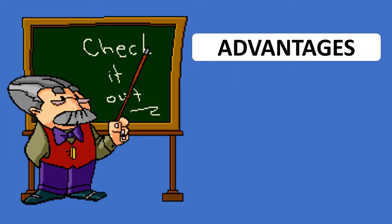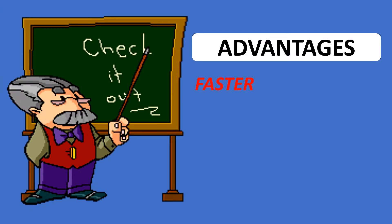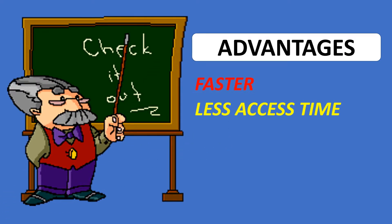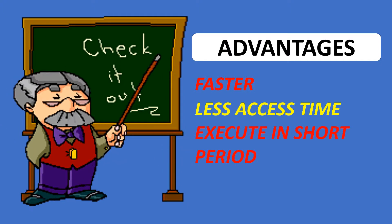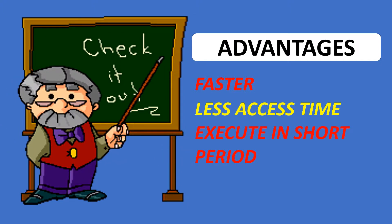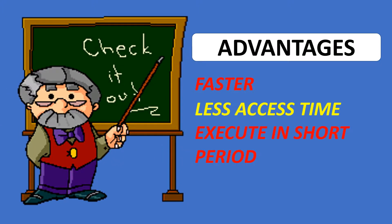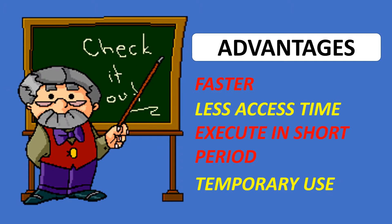The advantages of cache memory are: Cache memory is faster than main memory. It consumes less access time as compared to main memory. It stores the program that can be executed within a short period of time. It stores data for temporary use.